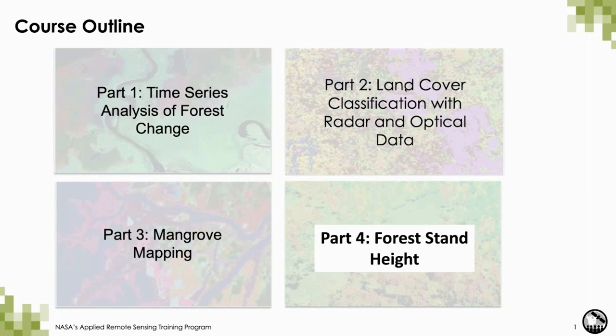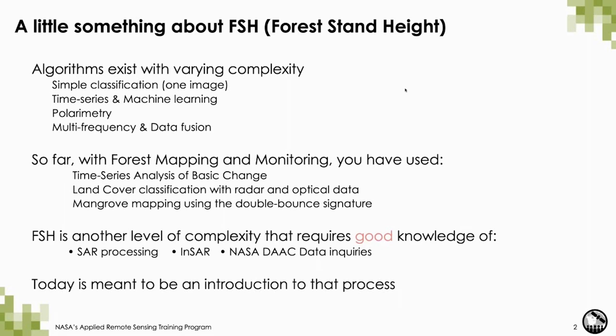Thank you so much, Erica, and welcome everybody to this fourth part of the series. We're talking about forest stand height here. You've already gone through three parts of this series with varying levels of complexity: time series analysis of basic change, land cover classification with radar and optical data, and mangrove mapping using the double bounce signature. These algorithms have varying degrees of complexity — some are very simple classifications, others involve time series and machine learning like random forest or decision trees, some use polarimetry, and others use multi-frequency concepts and data fusion.